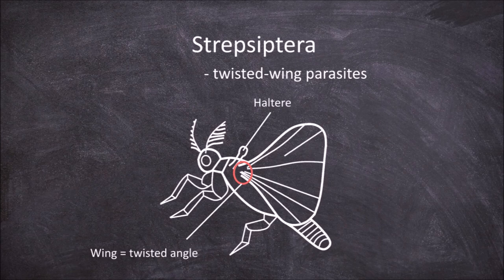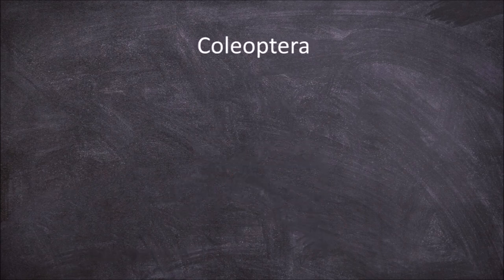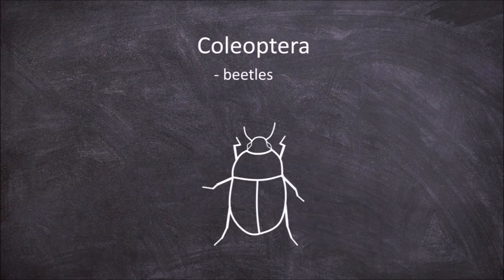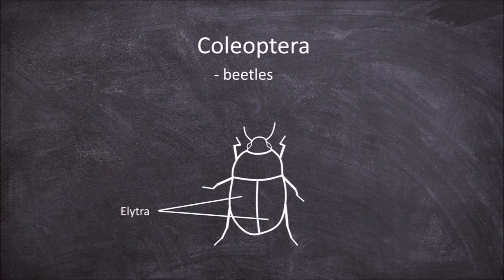The final order is the Coleoptera, which are the beetles. The defining characteristic of this order is that their forewings have adapted into hardened wing cases called elytra.